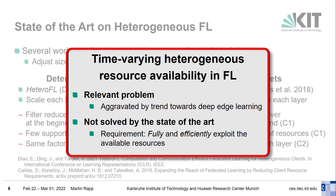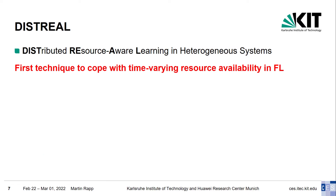To summarize, we have seen that time-varying heterogeneous resource availability is a relevant problem that will be aggravated by current trends towards deep edge learning. At the same time, this problem has not yet been solved. To this end, we present DISTRIEL, the first technique for time-varying resource availability in federated learning.